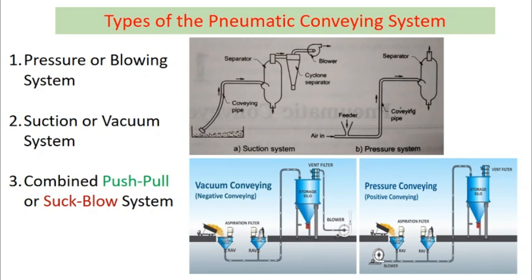In the pressure system, material is fed at the inlet and high pressure air is supplied using a blower. Due to the high pressure, particles are conveyed through the duct and separated at the discharge end. In contrast, in the suction system, a blower or vacuum system is placed at the discharge end. Due to the intense vacuum, granules are sucked through the hose pipe or conveying pipe, carried through the path, and collected in a separator. Fine particles are further separated in a cyclone separator.